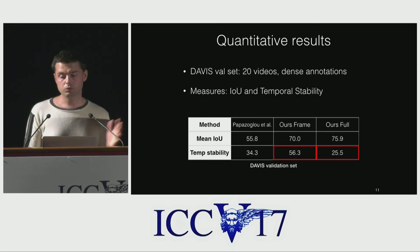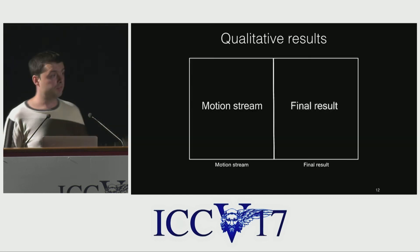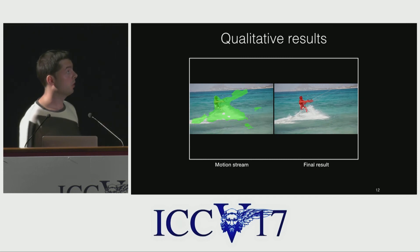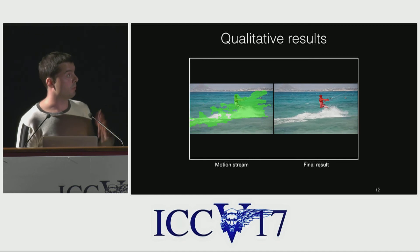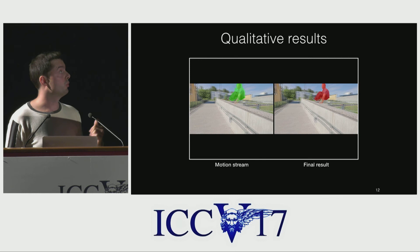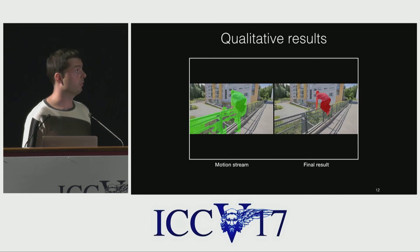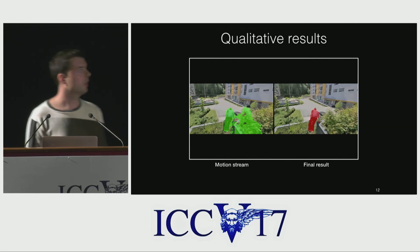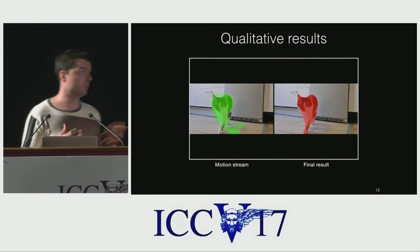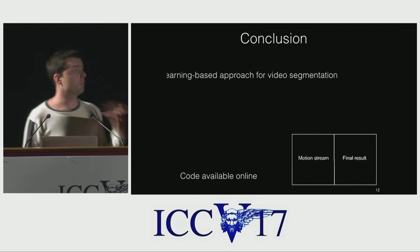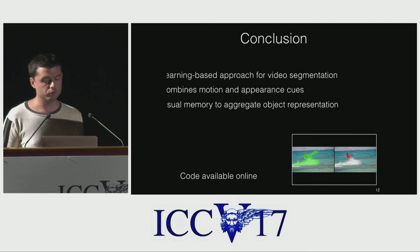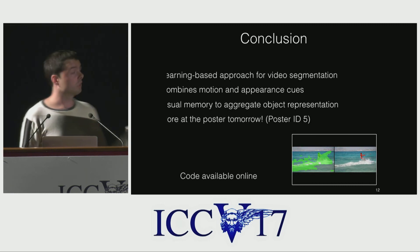Let's see some qualitative results. On the left we show the output of the motion stream, and on the right the final result of the model. In the first sequence, the motion stream segments moving water as well as the object, whereas our final model is able to focus on the surfer by utilizing appearance. In the next video, the motion stream produces mistakes due to inaccuracies in optical flow estimation, but our full model robustly corrects these and produces temporally smooth predictions. The final video demonstrates the effect of bidirectional processing — we are able to segment the cat also at the beginning of the video, before it starts moving, by utilizing information from the future. In summary, we introduced a learning-based approach for video object segmentation that combines motion and appearance cues with a visual memory model to aggregate the object representation. More results are available in the paper and the code is available online.